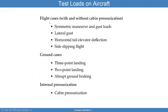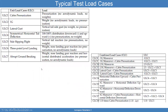The test loads on an aircraft will include a combination of flight cases: lateral gust, horizontal tail elevator deflection, side slipping flight, symmetric maneuver, and gust loads. And then you're going to have ground cases like three-point landing, two-point landing, abrupt ground braking, and internal pressure ratio like cabin pressure. These are the unit load cases — only a single load. You have cabin pressure by itself with no aerodynamics, 1G loadings which are just the weight, lateral gusts which are just the vertical tail side gusts, and so forth. So you have unit load cases that are then combined together to form new load cases, and these load cases are derived based upon what loading you expect to experience and will be applied to and evaluated on the aircraft.